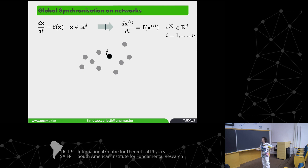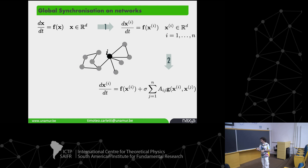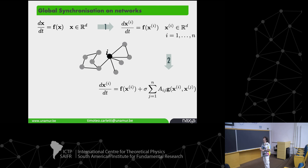Once you couple them — with springs, light signals, or almost anything — you end up with a very general structure: the isolated system plus sigma as a coupling strength, A_ij as the adjacency matrix telling you if i and j are connected. In my talk I only consider undirected networks, so if I'm connected to you, you're connected to me, and A_ij is 0 or 1 with no weights.